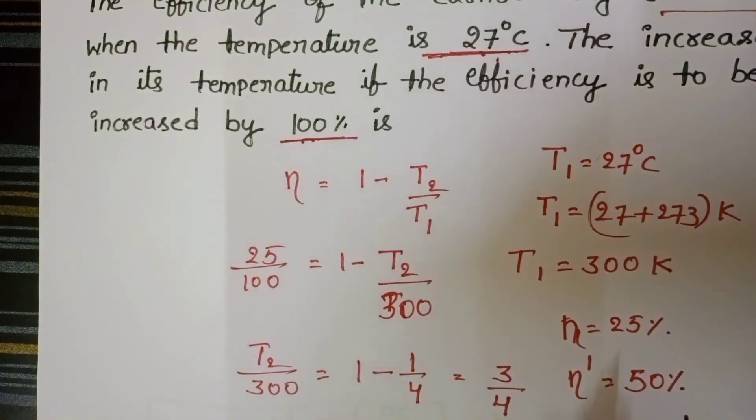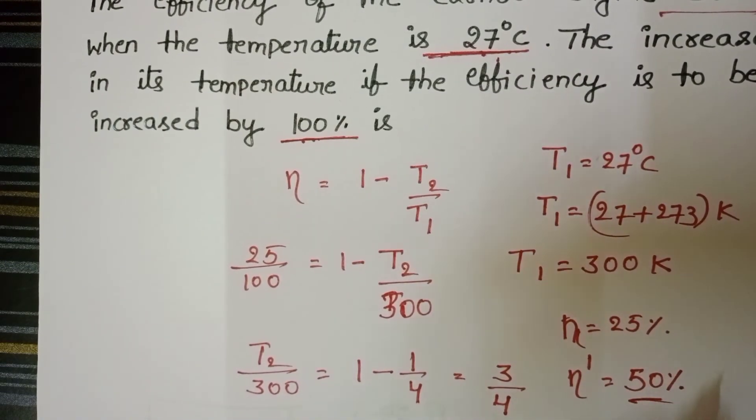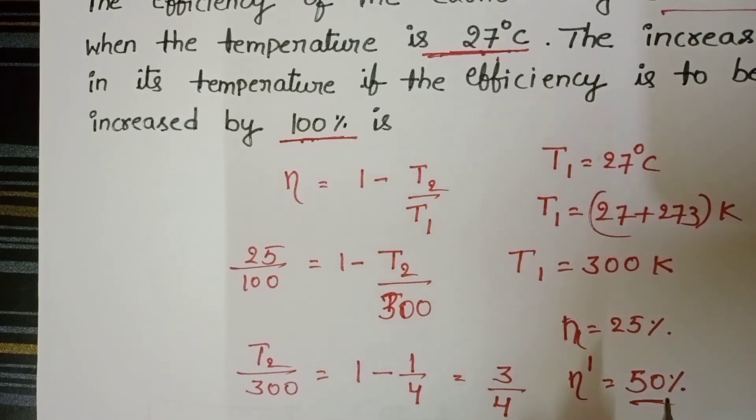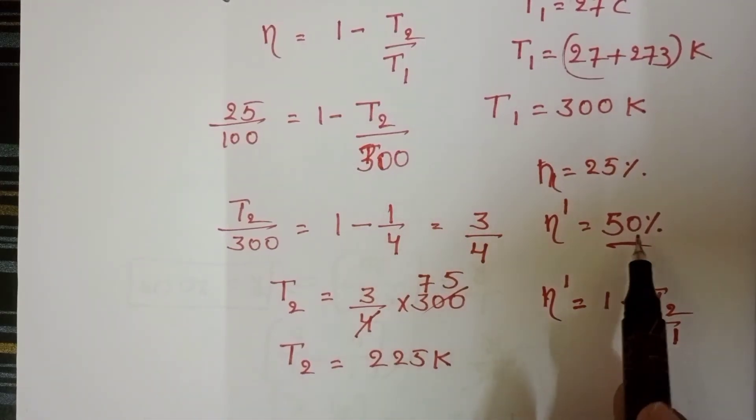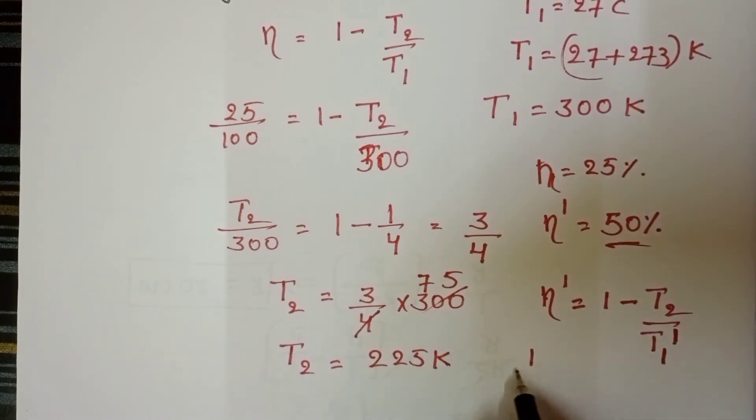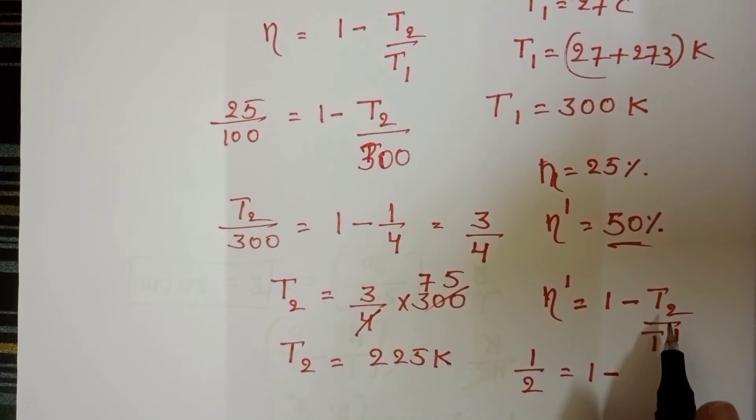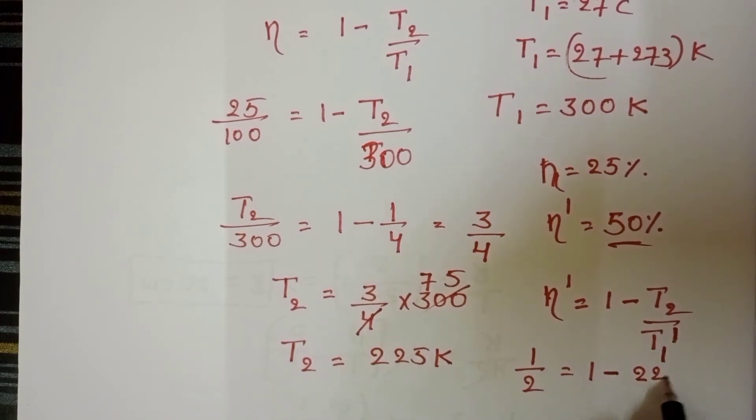At this efficiency, we have to find the increase in temperature of the source. First, find at 50% efficiency what is the temperature of the source. So in place of efficiency, 50 by 100, which becomes 1 by 2, equals 1 minus sink temperature 225 Kelvin by T1.